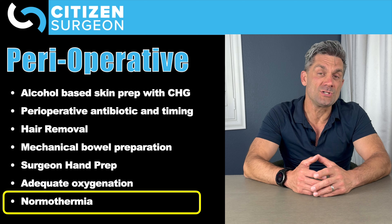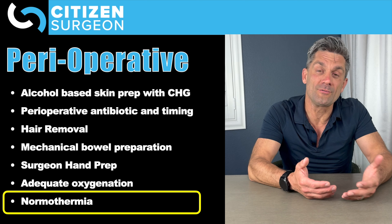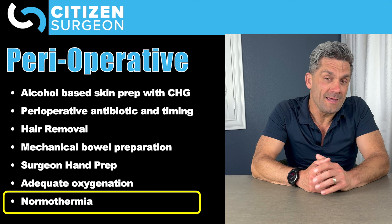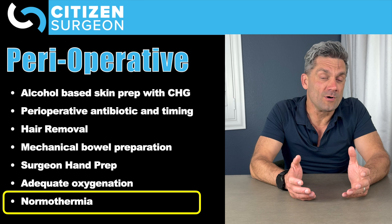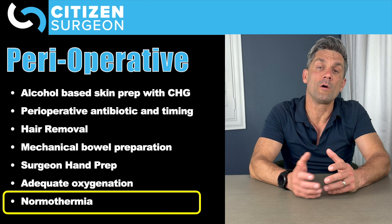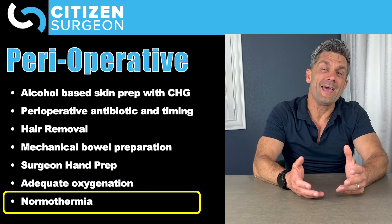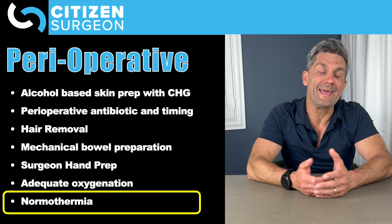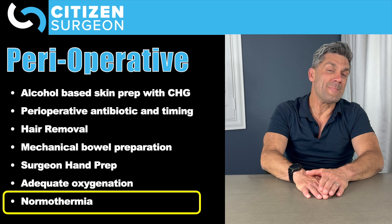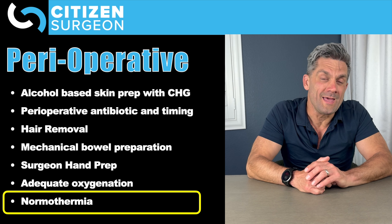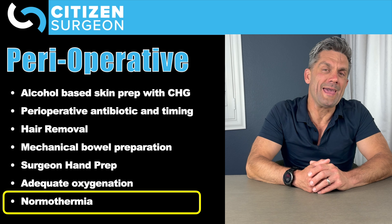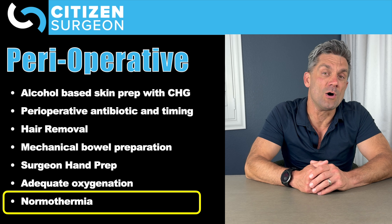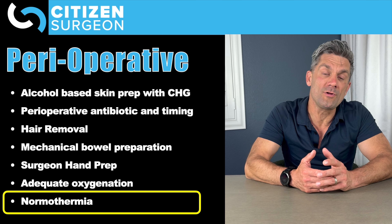Surgical hand prep involves specific technique: you start with the tips of your fingers and work down to the elbows, not letting water come back toward your hands. Surgeons and scrub techs learn this technique to maintain clean hands for operating. We've known since the days of Lister that cleaning your hands decreases the risk of surgical site infection.